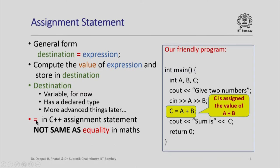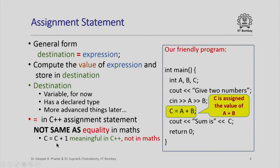The equal symbol in a C++ assignment statement is not the same as equality in mathematics, and this is very important to keep in mind. For example, C assigned C plus 1 is a meaningful statement in C++. Here we are saying: compute the value of C plus 1 and store it in the variable C again.